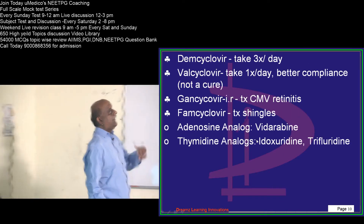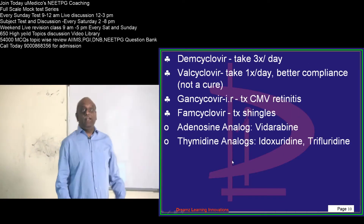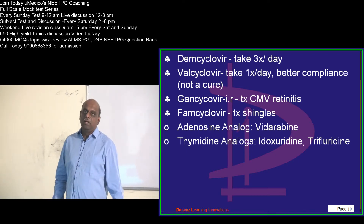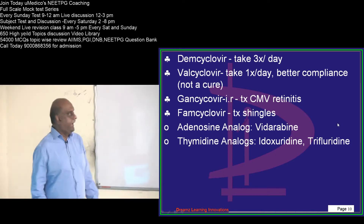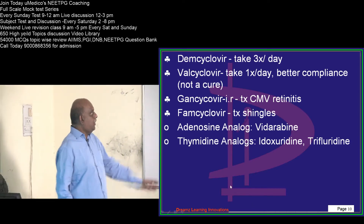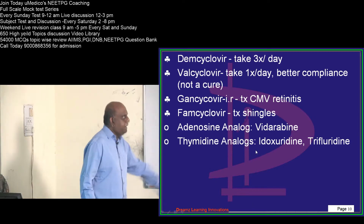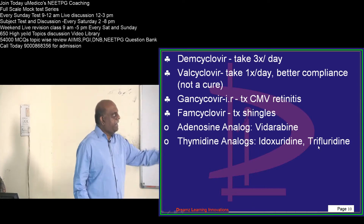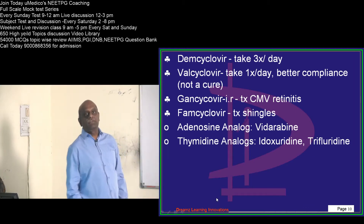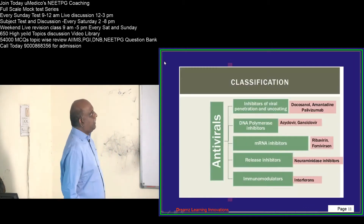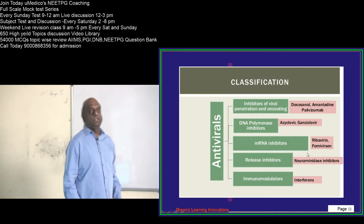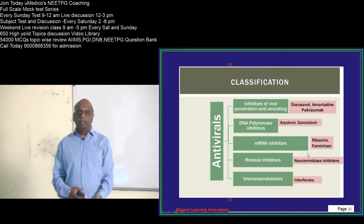You also have adenosine analogs like vidarabine, which is an analog of adenosine. Then there are thymidine analogs like idoxuridine and trifluridine, which are examples of thymidine analogs.